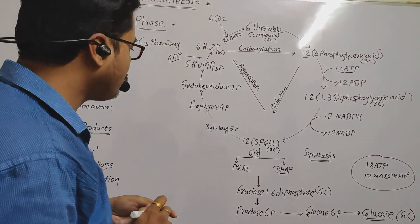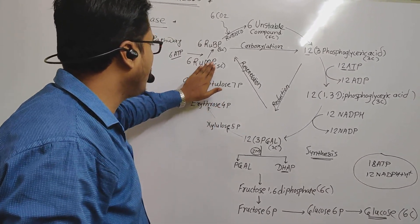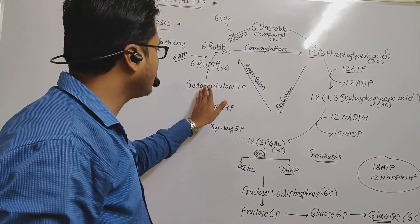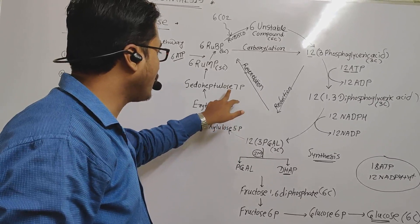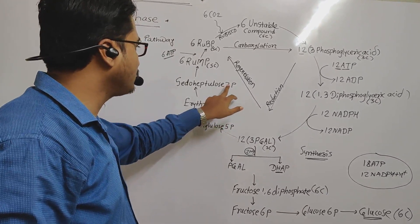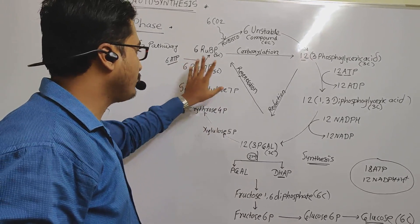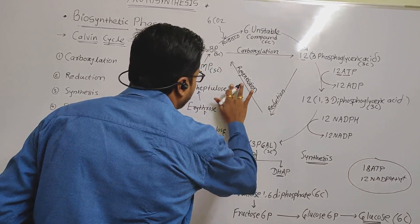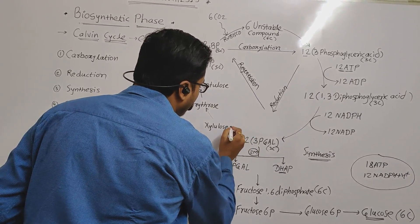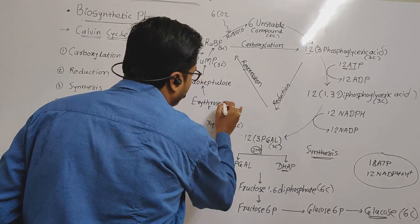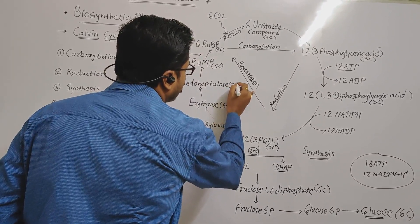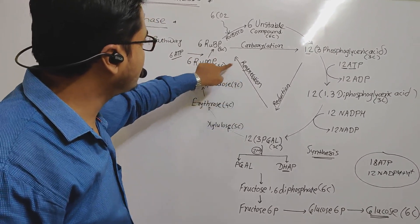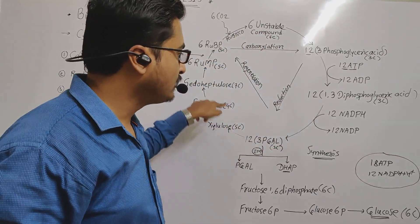To synthesize one molecule of glucose, there is a requirement of 18 ATP and 12 NADPH+H⁺. When this much assimilatory power is utilized, one glucose molecule is formed. The 18 ATP calculation: 12 ATP in reduction plus 6 ATP in regeneration equals 18. And 12 NADPH+H⁺ are also utilized. After regeneration, RuBP is regenerated and the cycle continues.